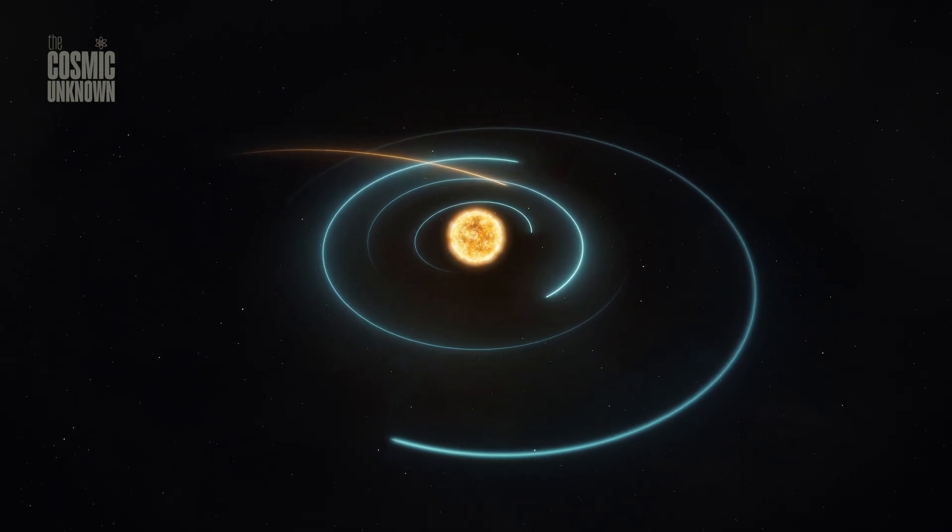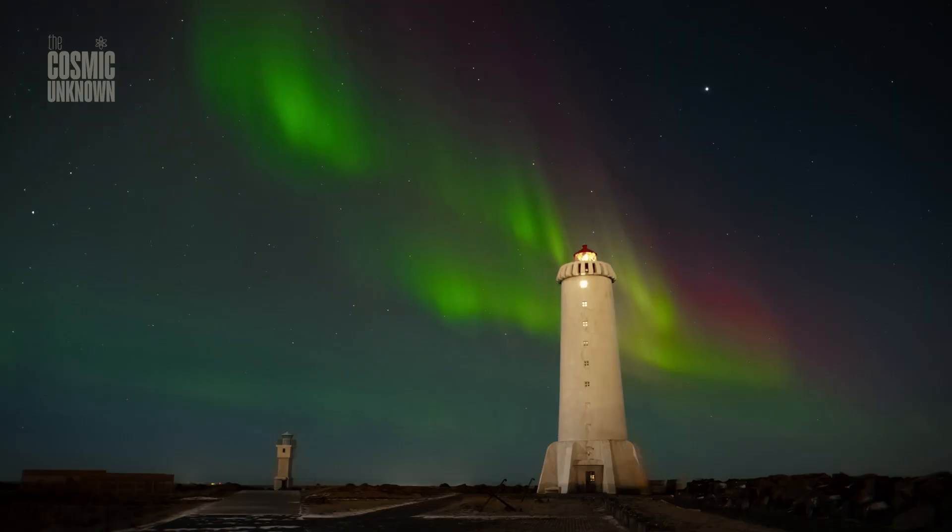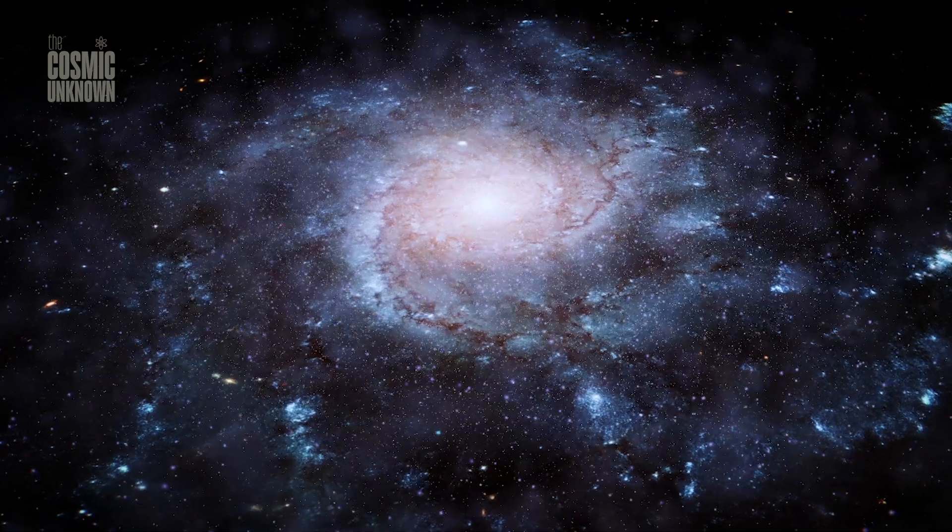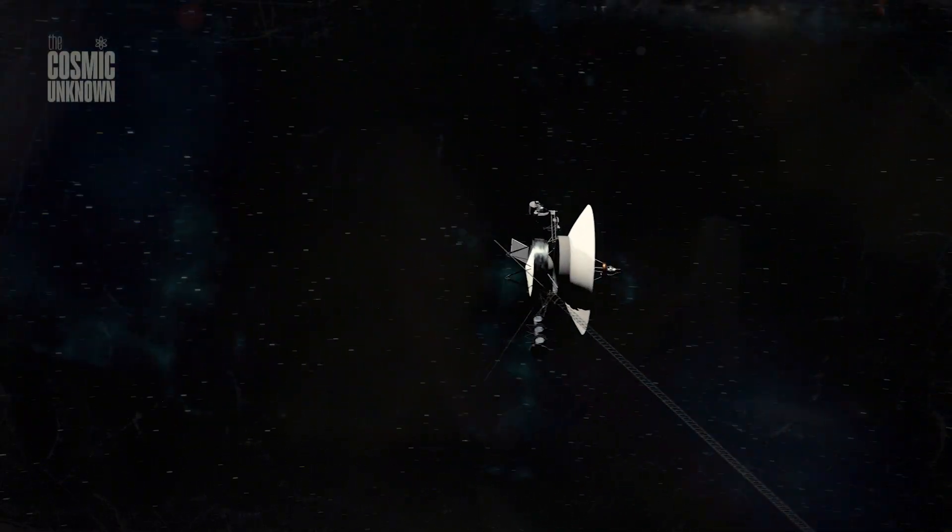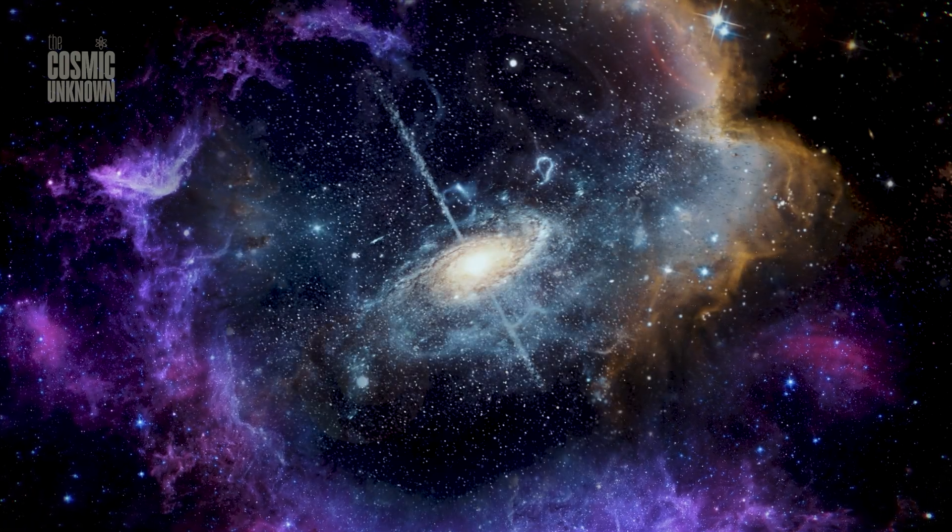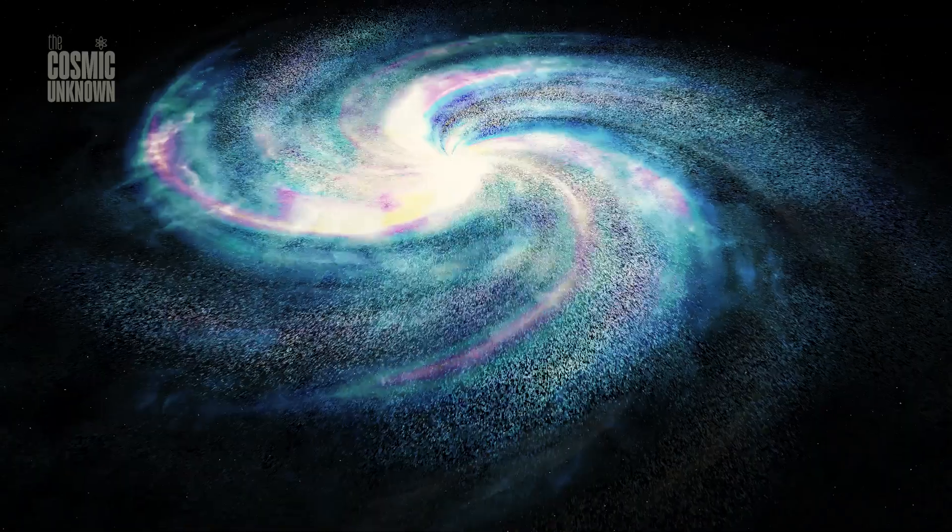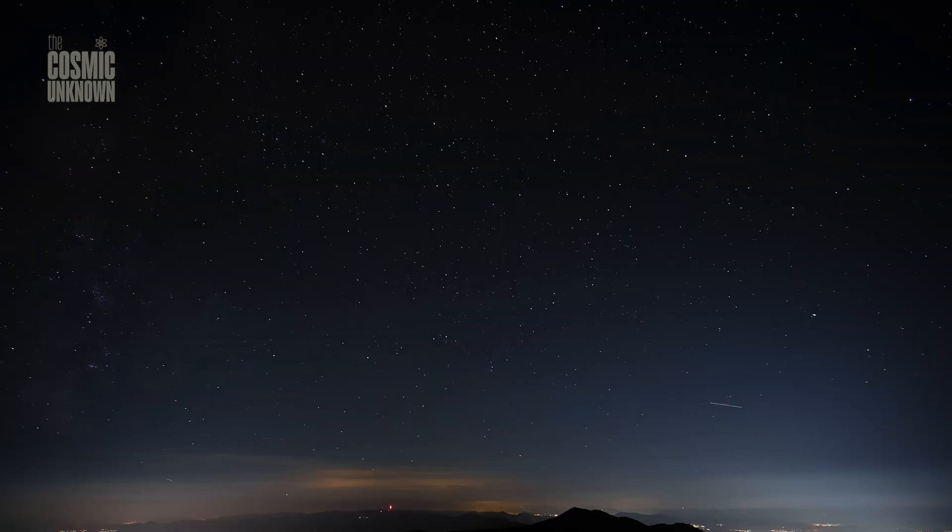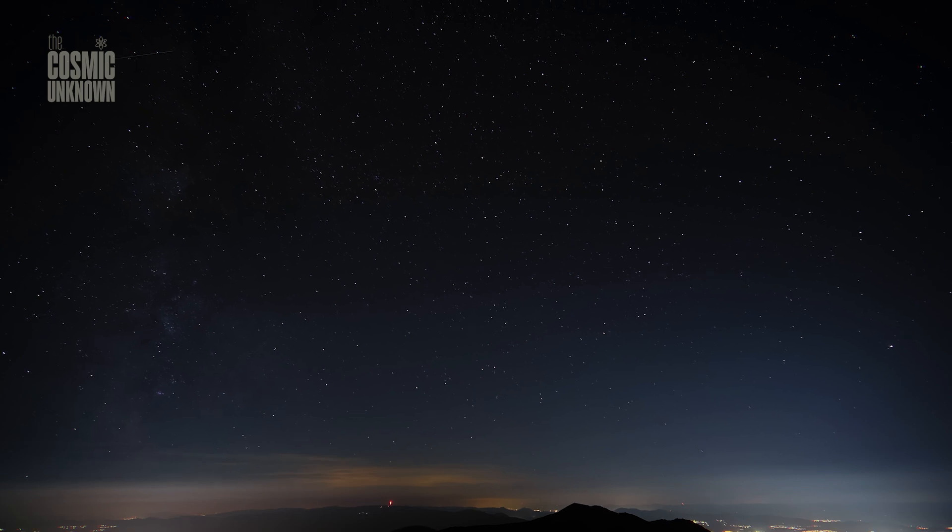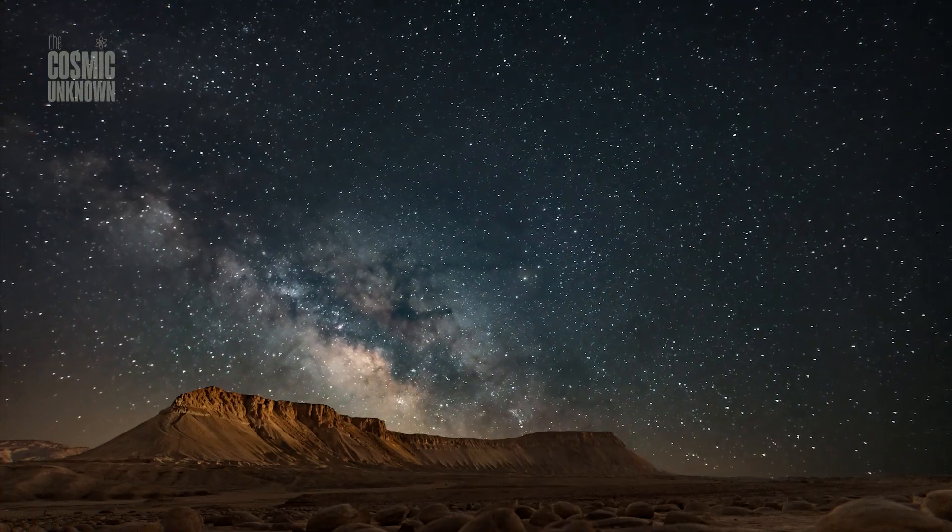And so perhaps, by not being at the center, we were given a chance. The outskirts of the galaxy are quieter, less crowded, less catastrophic. Here, the stars are more scattered. The supernovae are rare. The radiation is dim, and in that dimness, life found a foothold. Complex molecules had time to form. Planets had time to cool. Consciousness had time to ask questions. For a long time, our distance from the center felt like a demotion. First, Earth was not the center of the universe. Then the sun wasn't the center of the galaxy. And now, we find ourselves in a forgotten corner of a vast spinning disk. But maybe that's not insignificance. Maybe that's shelter. Maybe the reason we're here to ponder our place in the galaxy is precisely because we weren't in its spotlight.